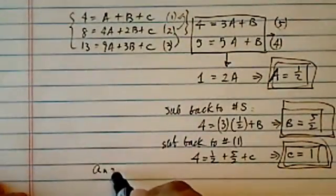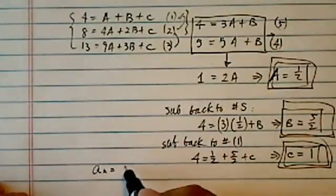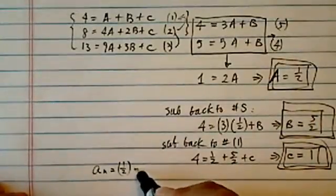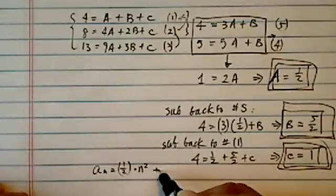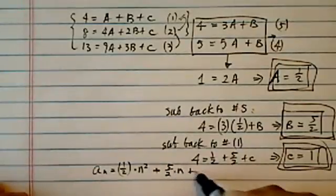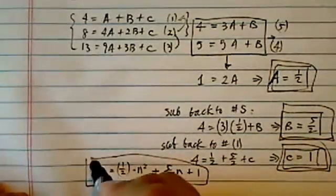So our recursive rule looks like a_n is equal to half times index squared, plus five and a half times index, plus 1. Here's our rule.